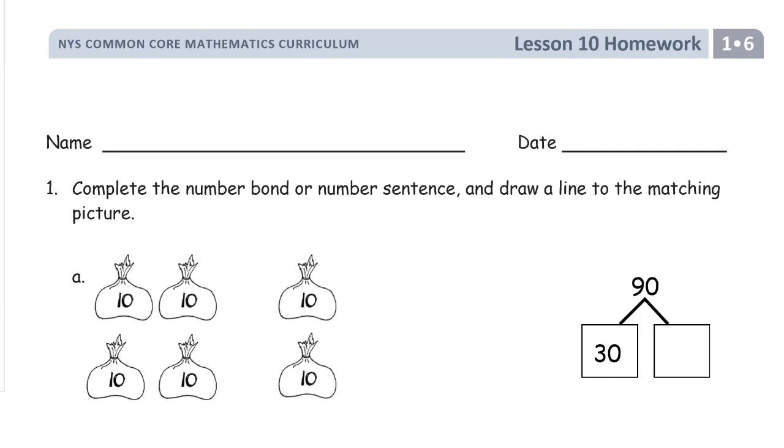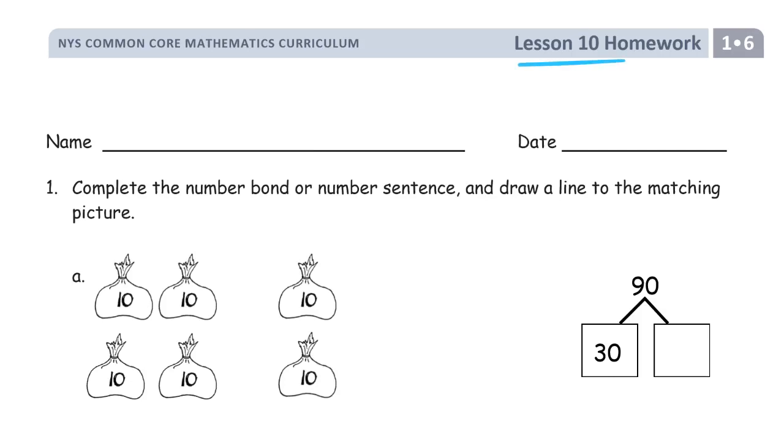Welcome to the homework for Lesson 10. This is Module 6 of First Grade. Name first so that you don't forget it later. And complete the number bond or number sentence and draw a line to the matching picture.